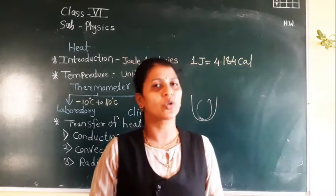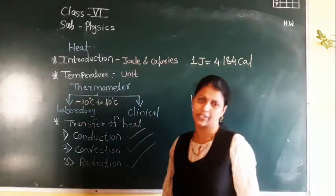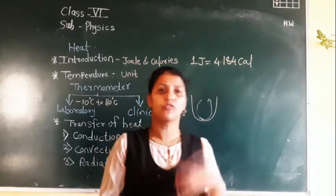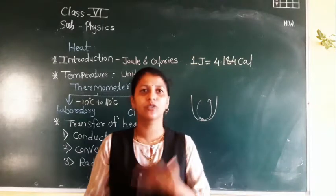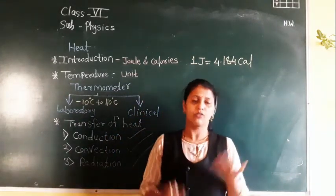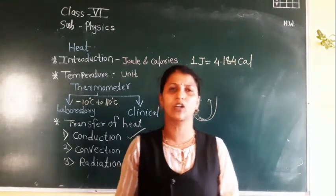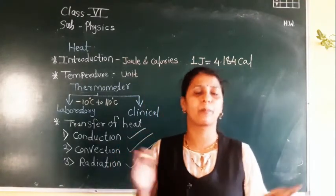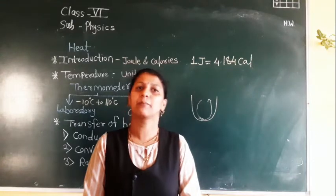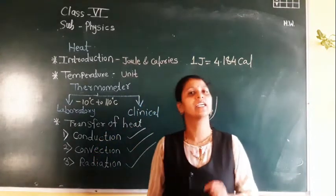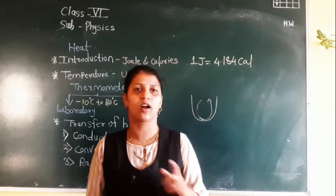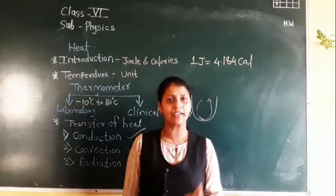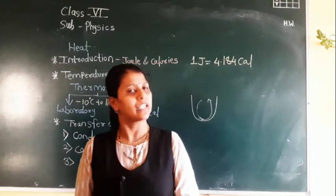There is one more point: conductors and insulators. The material through which heat can transfer is called a good conductor of heat — for example, metals are good conductors of heat. A bad conductor is material which does not allow heat to pass through it, also called an insulator. For example, plastic is a bad conductor of heat, also called an insulator.